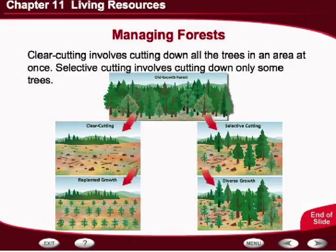A much better choice, however, is selective cutting, where only part of the trees are taken out of the forest. This does two things: as the forest grows back, it has a much more natural appearance, and more importantly, it doesn't destroy an entire ecosystem. A multitude of organisms use forest trees for the basis of their ecosystem, both for food and shelter. Clear cutting destroys the entire ecosystem, while selective cutting does damage it but doesn't destroy it. Since many trees are left behind, it allows the ecosystem to restore itself at a much faster pace than an area that has been clear cut.